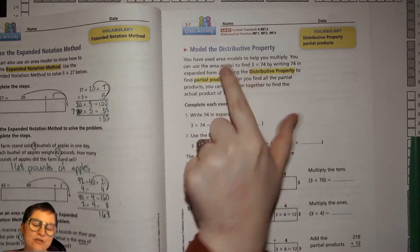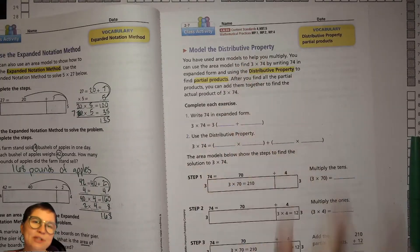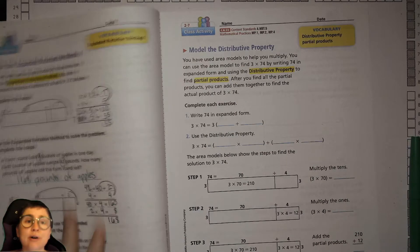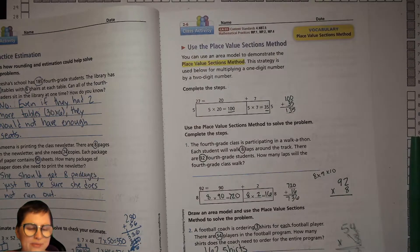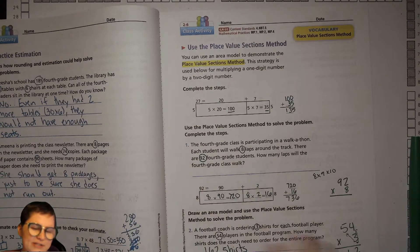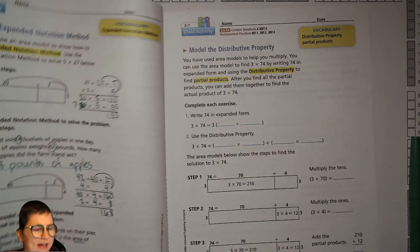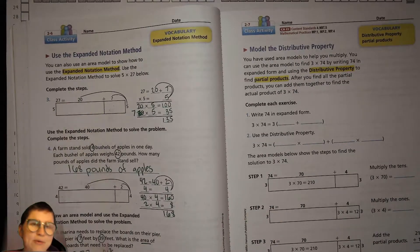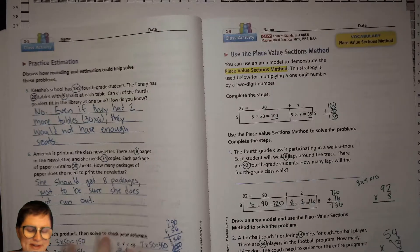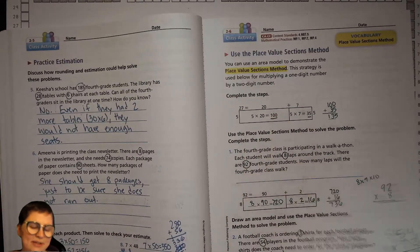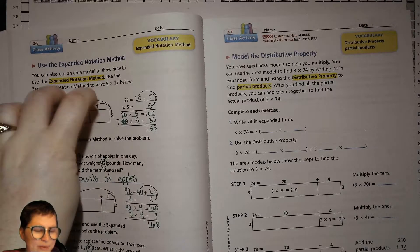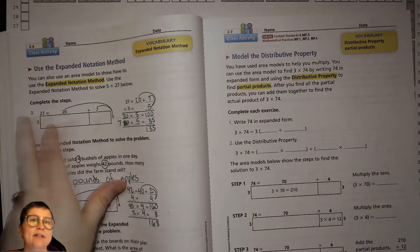This isn't really a new method but it's giving you the vocabulary for what we've already been doing. Earlier we were using the place value sections method and the expanded notation method, and you'll notice that in both of these, one difference was you're writing the numbers inside the boxes and one is to the side of the boxes.